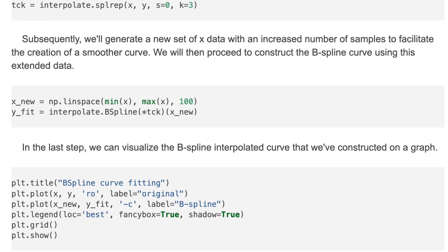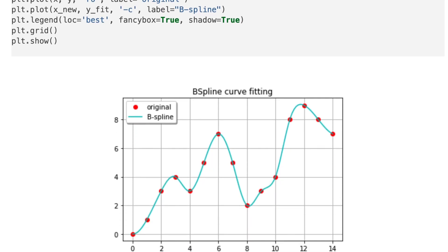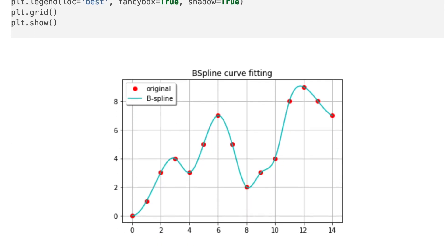In the last step, we can visualize a B-spline interpolated curve that we have constructed on a graph. Here is the result. Here we have got interpolated curve.